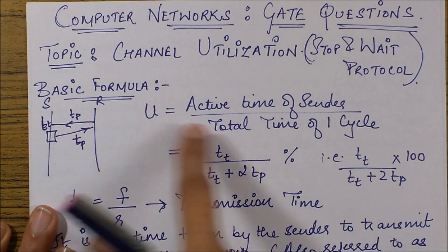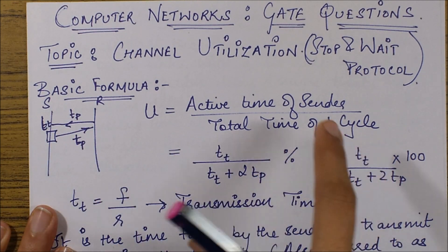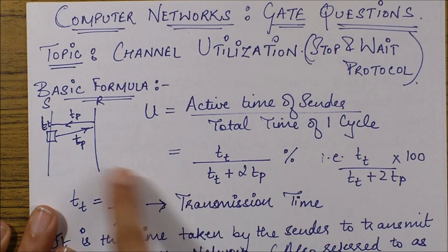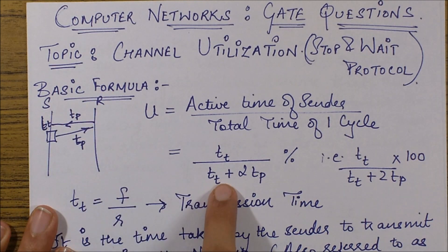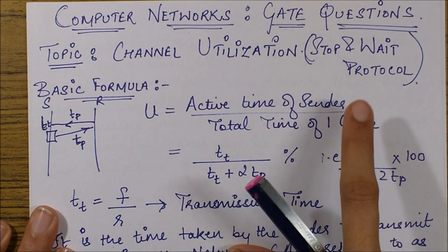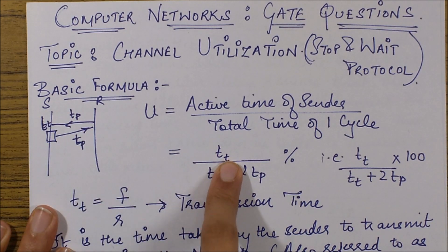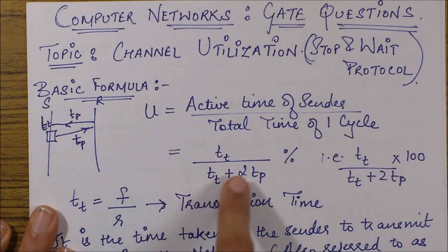Total time of one cycle is tt plus tp plus tp, which is tt plus 2tp. But the active time of the sender is when it was preparing the frame, which is tt. So the utilization formula is tt by tt plus 2tp.